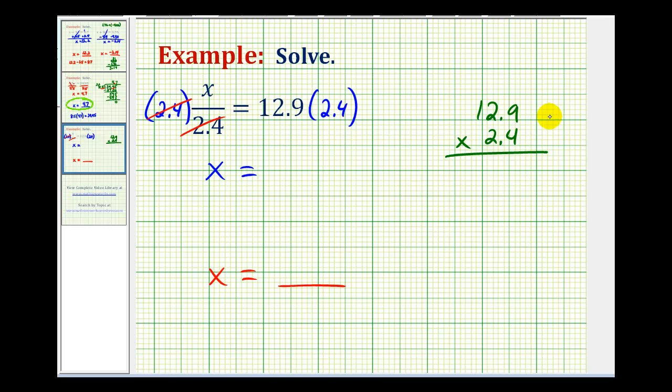Notice how this first decimal has one decimal place, and so does this one. And since one plus one is equal to two, this product must contain two decimal places.